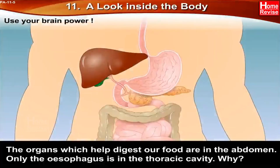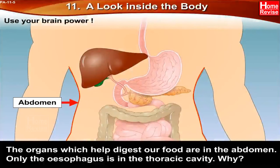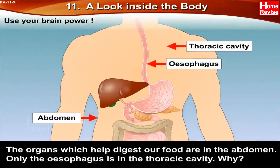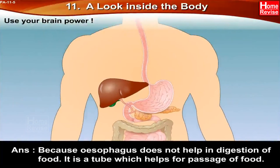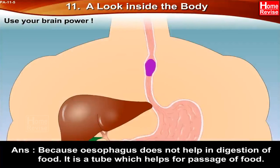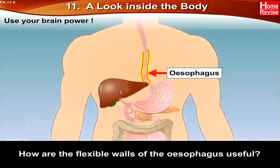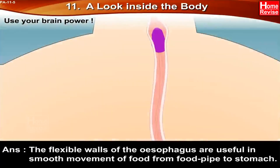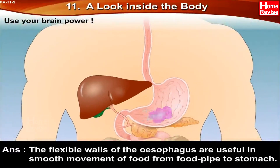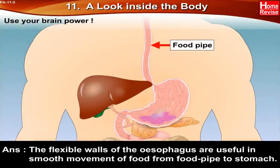The organs which help digest our food are in the abdomen — only the esophagus is in the thoracic cavity. Why? Because the esophagus does not help in digestion of food; it is a tube which helps for the passage of food. The flexible walls of the esophagus are useful in the smooth movement of food from the food pipe to the stomach.